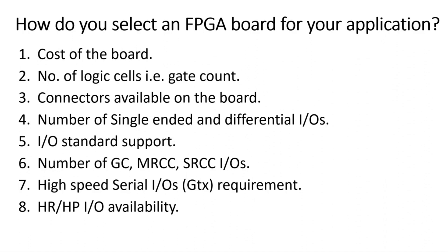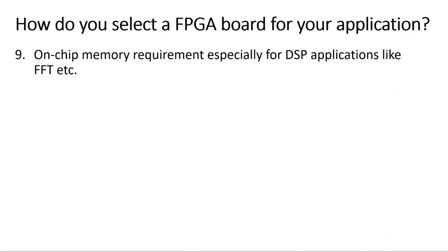The ninth point is on-chip memory requirement, especially for DSP applications like FFT. FPGAs have two types of on-chip memory: one is called Block RAM and the other is Distributed Memory. You need to determine how much memory is required in your application and choose the FPGA board accordingly.